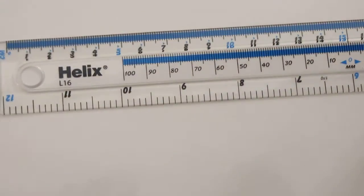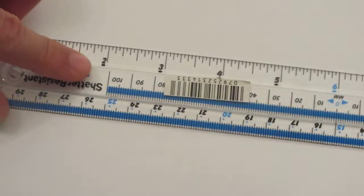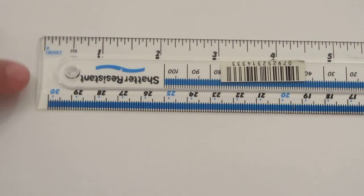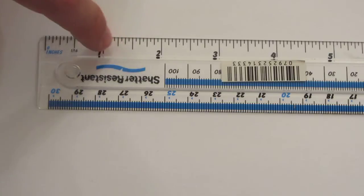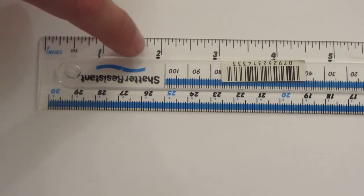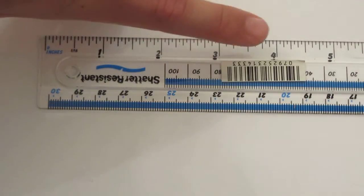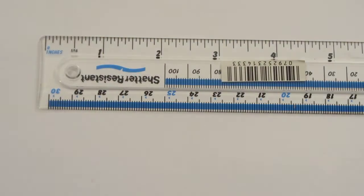If I turn the ruler around, and start at this end, again, at the left, at zero, this is now counting in inches. And that refers to one inch, two inches, three inches, four inches, and so on.